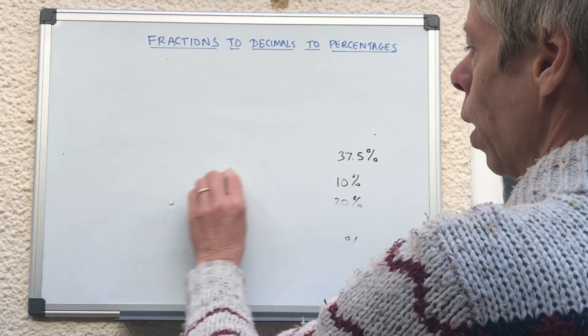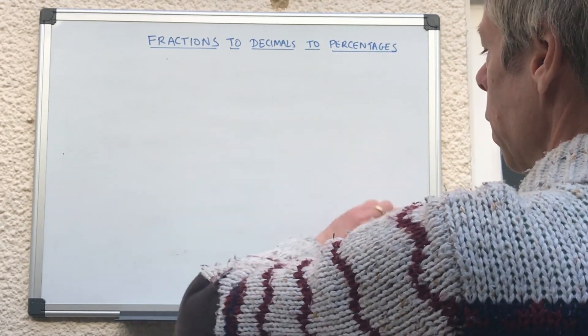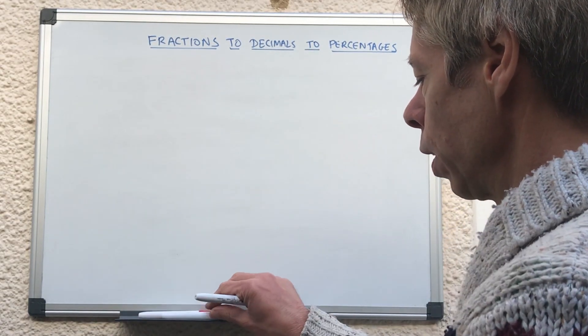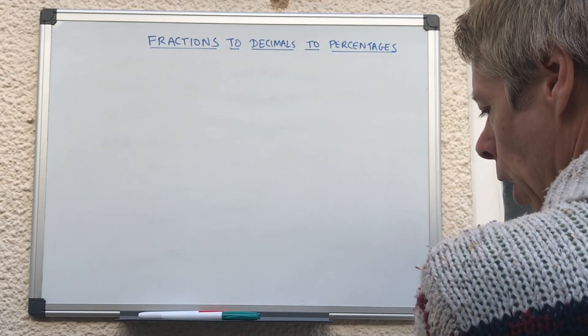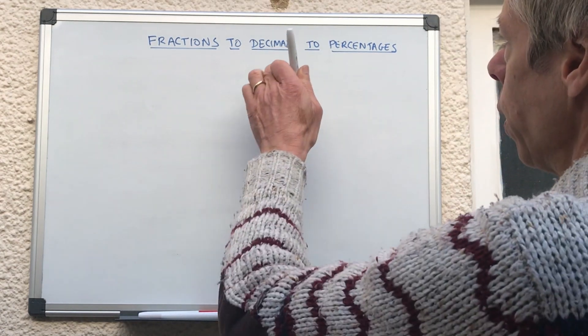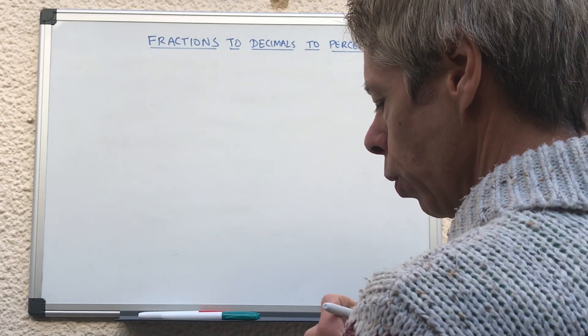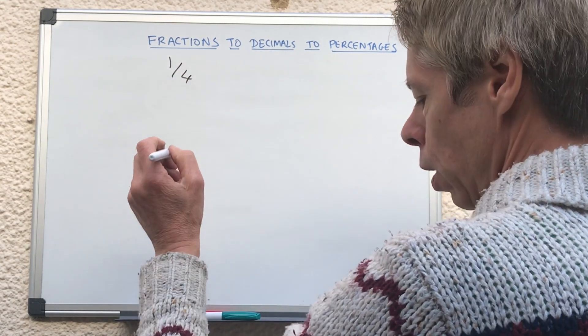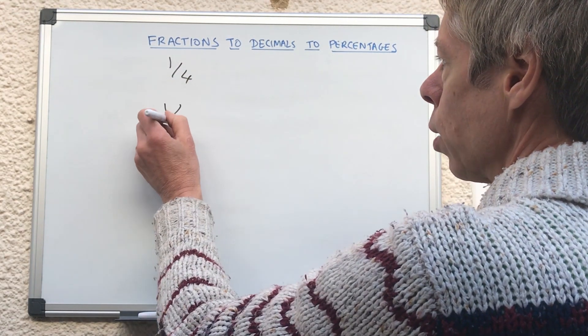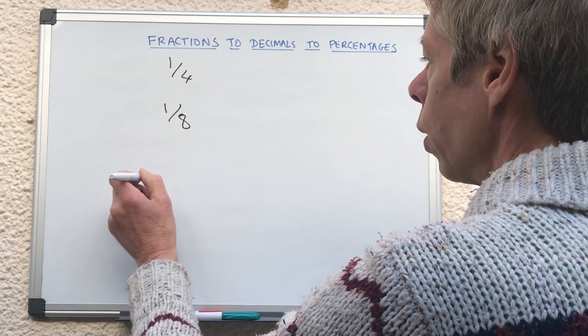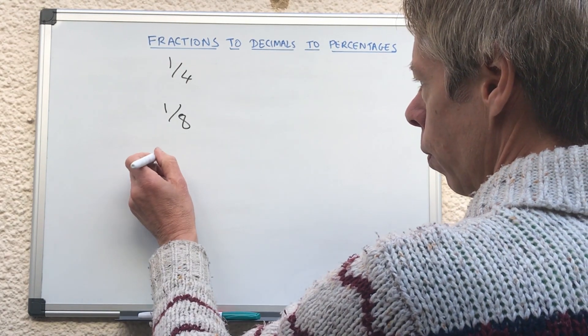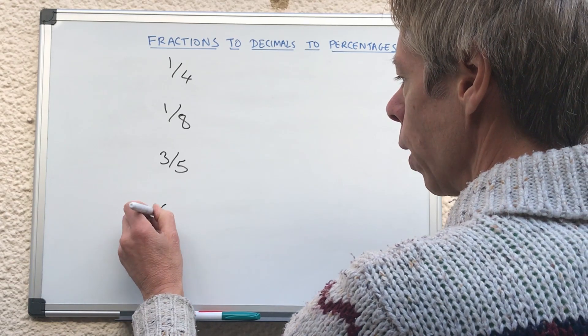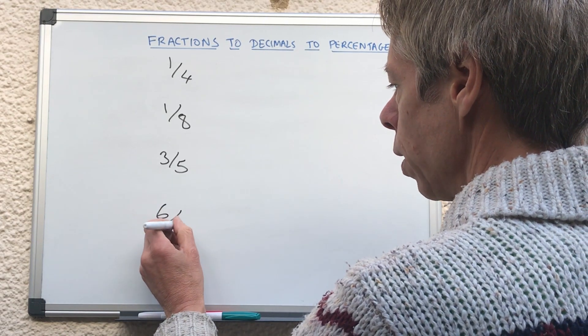So we are converting fractions to decimals to percentages, so what I'll be doing, I'll be writing up the fraction, and you'll need to convert it to a decimal and a percentage. So first of all, we have one quarter, our first one, second one is one eighth, remember the mozzarella, third one is three fifths, and the fourth one is six twenty-fifths.